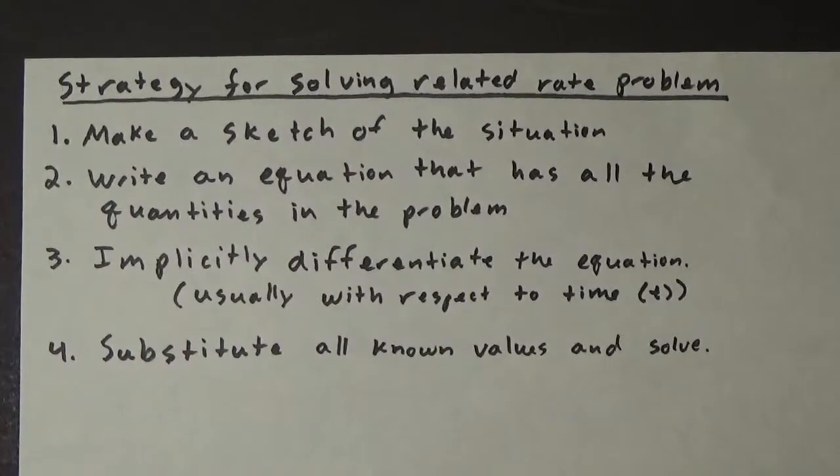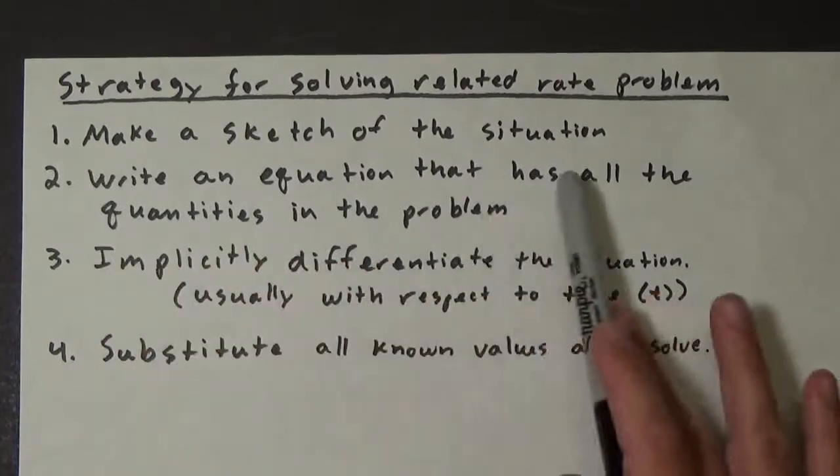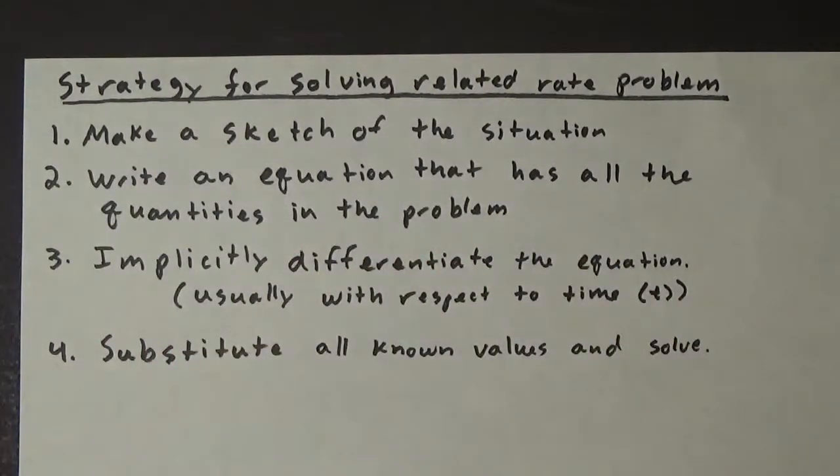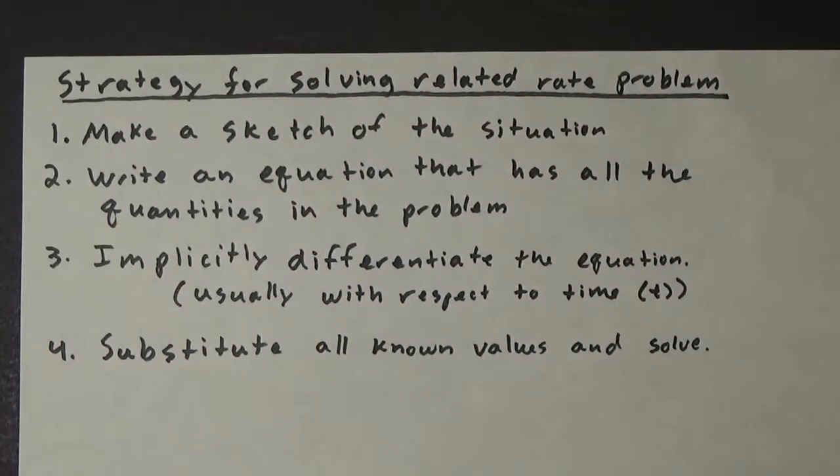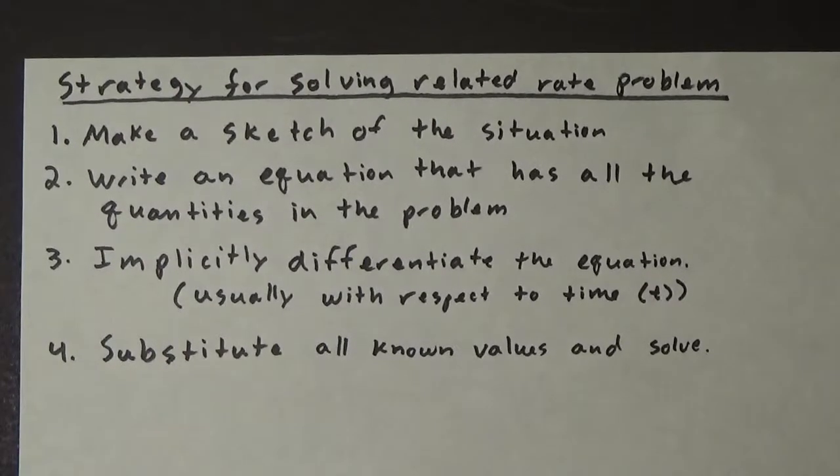Step two: we're gonna write an equation that has all the quantities in the problem. So sometimes this is kind of a tough step because you have this problem and you've got to come up with an equation that relates all the variables. Sometimes there's more than one choice of an equation that could possibly be used, but usually there's only one that has everything that we want in it.